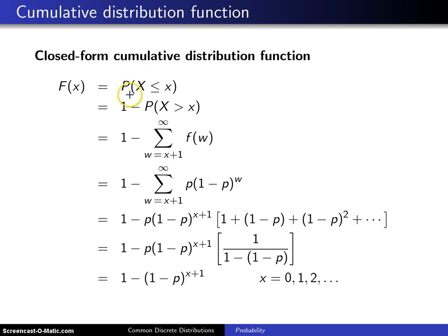This probability, because it is a discrete random variable, is 1 minus the probability that X is strictly greater than little x. And that is 1 minus the summation. To be strictly greater than X, we begin our summation at X plus 1 and go to infinity of the probability mass function f(w).